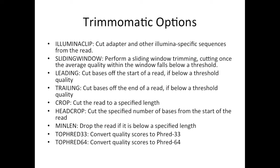Another really important setting is minimum length, and what this does is drop any read that is below a specified length. Depending on your organism, you probably don't want reads that are 10 base pairs long mapping to your genome, because they're not going to be very unique. The suggestion for the minimum length is 36 base pairs. This works well in human — you don't want to go below that when you want to map uniquely in human.